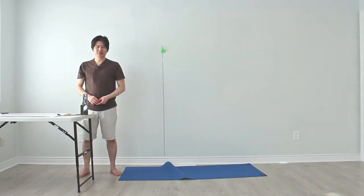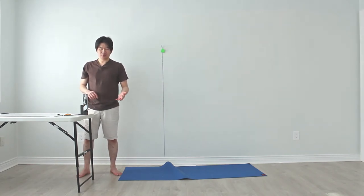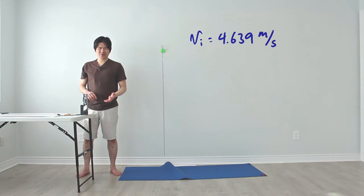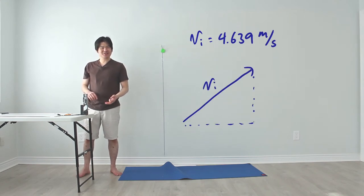Now that we've figured out what the initial muzzle velocity is, we can now determine the range that this ball will travel. Of course, we want to set a certain angle for its projection. For today's episode, let's just choose the angle of 60 degrees.